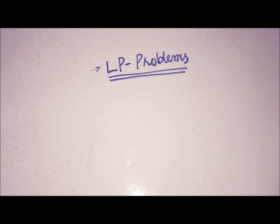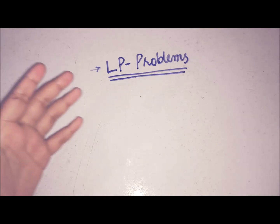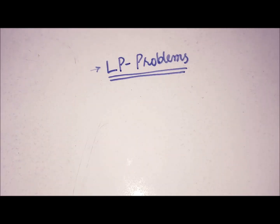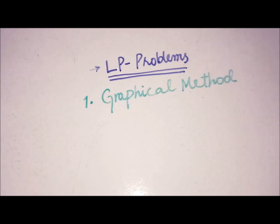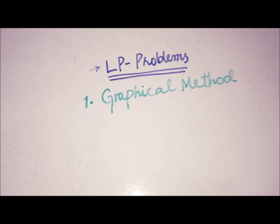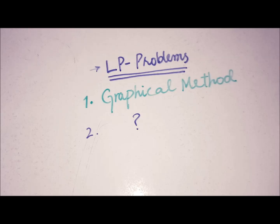Hello everyone, this is DA from eAcademy. Today we will talk about another technique for solving linear programming problems. We have seen the graphical method in the previous video, and I already mentioned that the graphical method is really useful when no more than two primary variables are present. This video answers what the second method is when the number of primary variables exceeds two — and the answer is the simplex method.